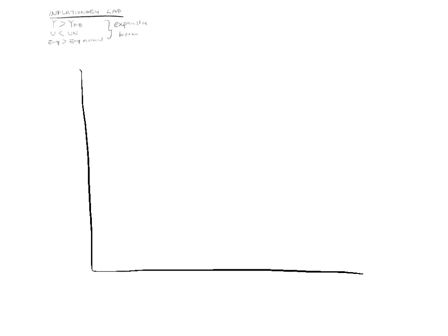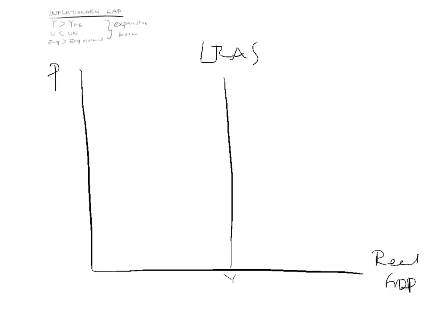Let's draw out the situation. On the axes we have price level and real GDP, and we draw the long-run aggregate supply. We are currently at potential output with unemployment at the natural rate. We find our short-run equilibrium where we are producing more than this — where output is greater than potential.